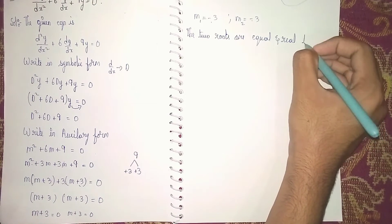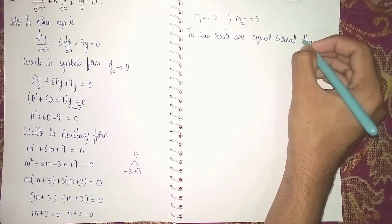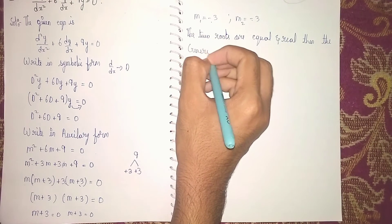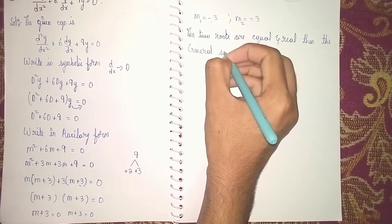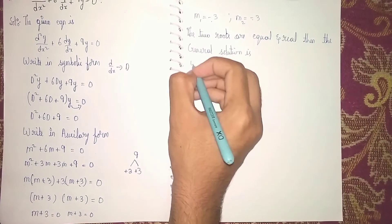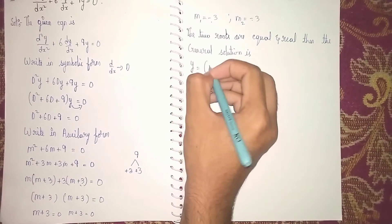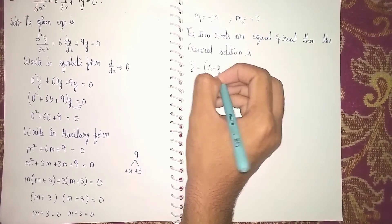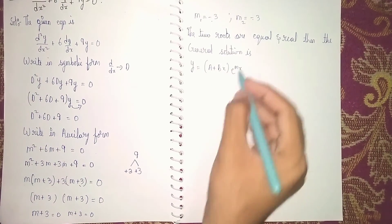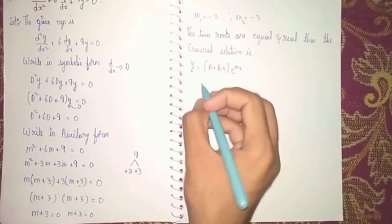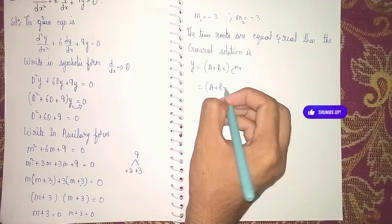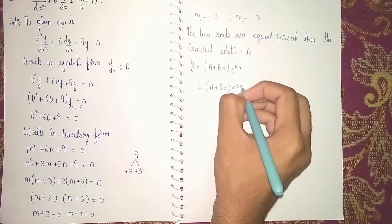Then the general solution is y = (a + bx)e^(mx). Since both are the same, we write a + bx into e^(-3x). This is our answer.